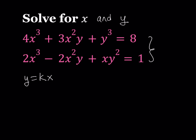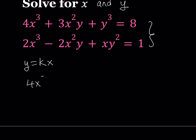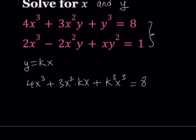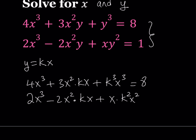Here k is a real number and we're just introducing a new variable. So let's substitute that into each equation. We get 4x³ + 3x²(kx) + k³x³ = 8. In the second equation we get 2x³ - 2x²(kx) + x(k²x²) = 1.